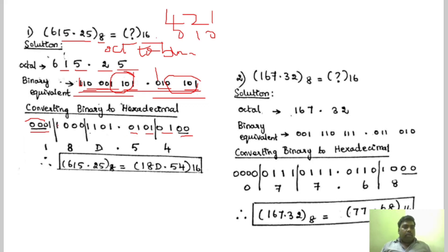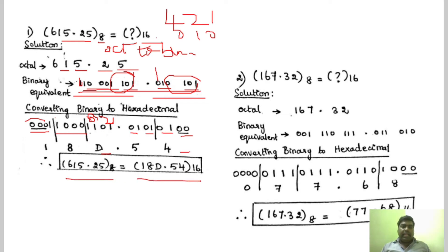Now we have to write the equivalent hexadecimal number. You can see this group is 1 and this is 8. Writing in 8421: this group is 8 plus 4 plus 1 which is 13, and 13 is D. And this is 5, and this is 4. So for this octal number, the equivalent hexadecimal number is 18D.54.